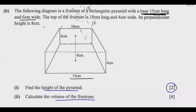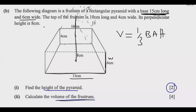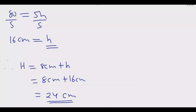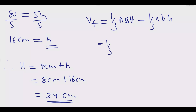For Roman numeral 2, calculate the volume of the frustum. The volume of the complete pyramid is one third times A times B times H. The volume of the frustum is the volume of the large pyramid minus the volume of the small pyramid on top: one third times (A × B × H minus a × b × h). Substituting: one third times (6 × 15 × 24 minus 4 × 10 × 16).